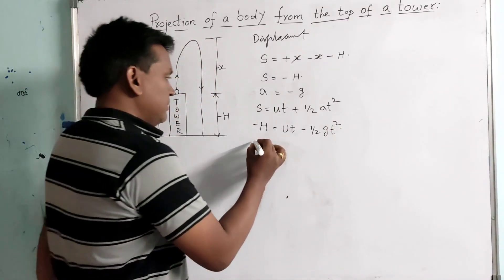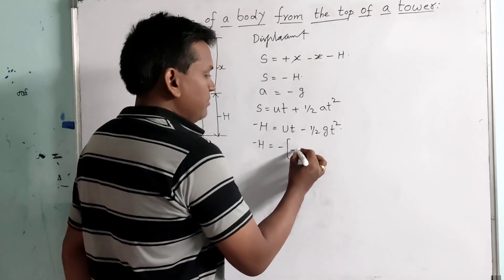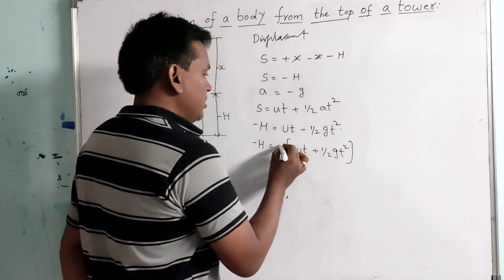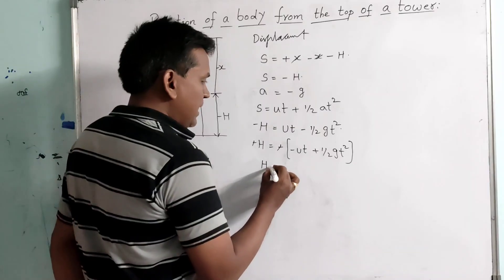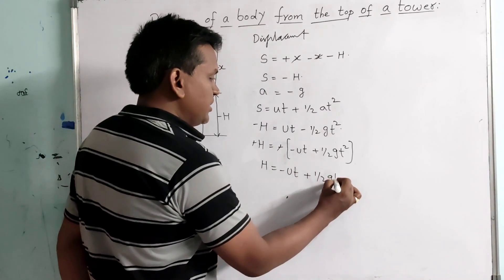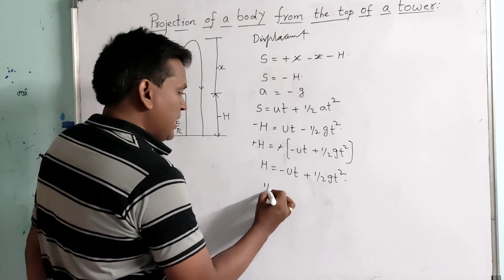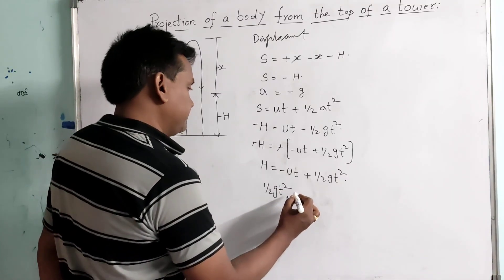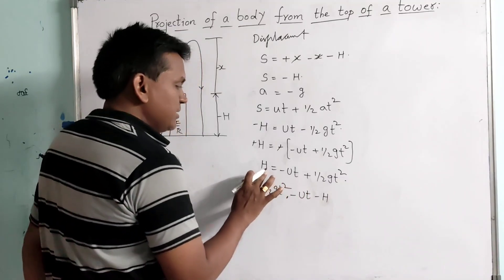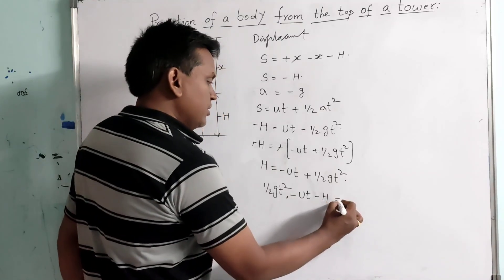Now, minus H equals UT minus half GT squared. Taking minus common: minus H equals minus of (UT minus half GT squared), which gives minus UT plus half GT squared. Cancelling the negatives, H equals minus UT plus half GT squared. Rearranging: half GT squared minus UT minus H equals 0.